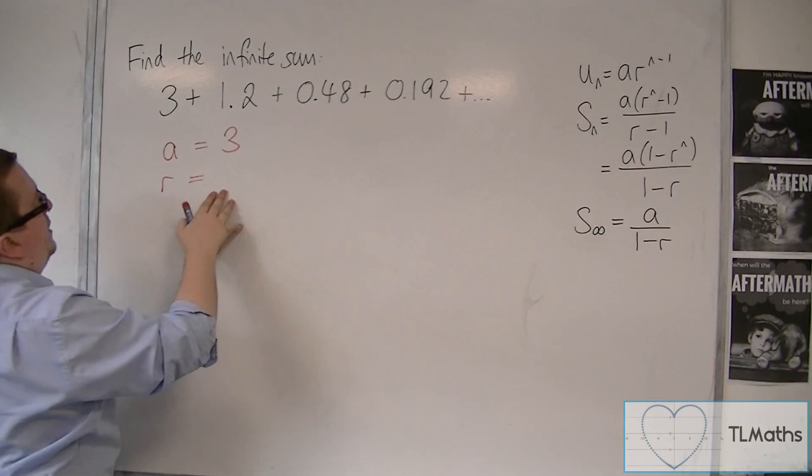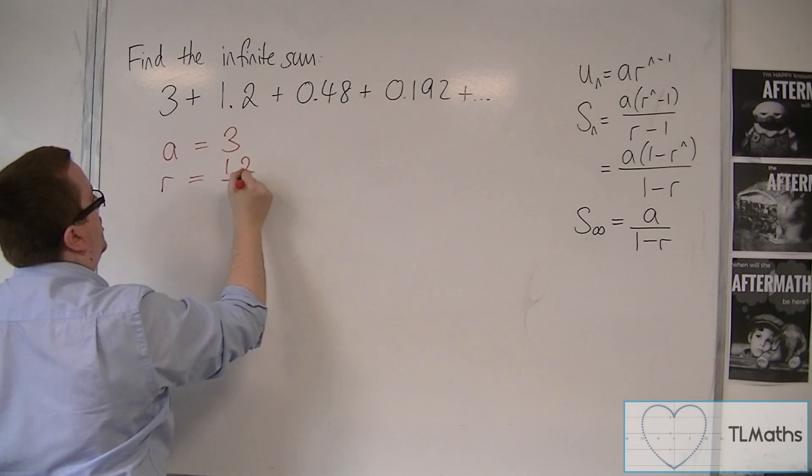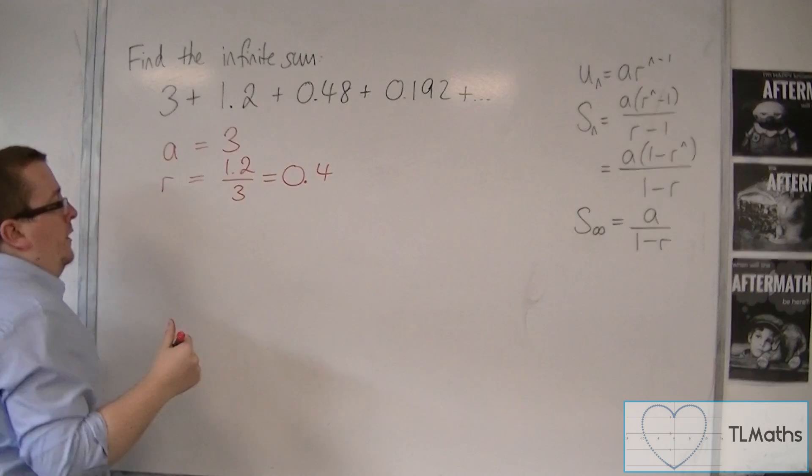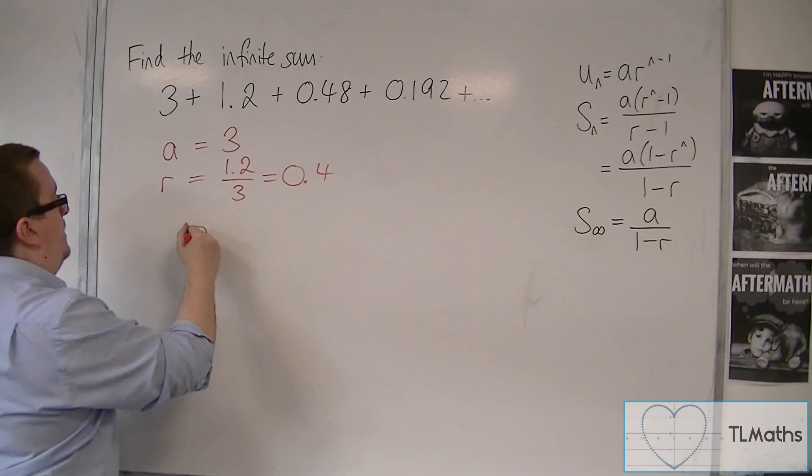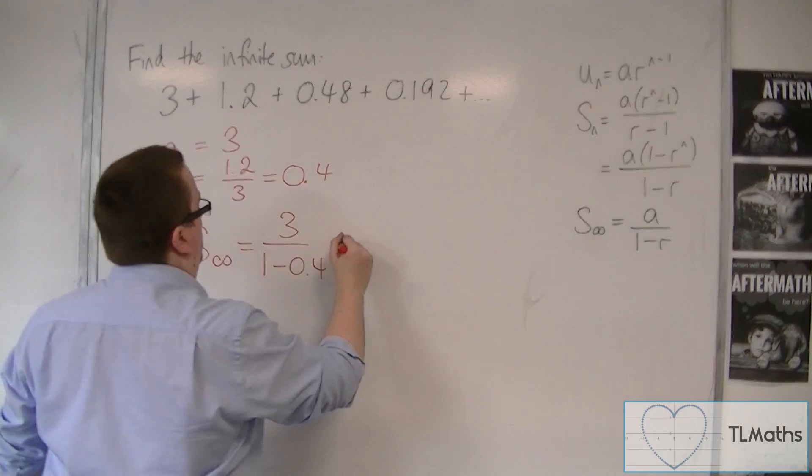R can be found by dividing one term by the previous term. So 1.2 divided by 3 is actually 0.4. So now the sum to infinity is equal to A over 1 minus 0.4.